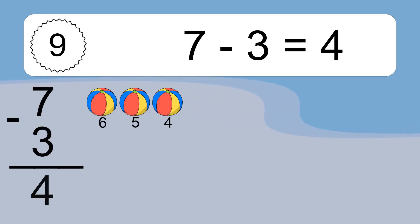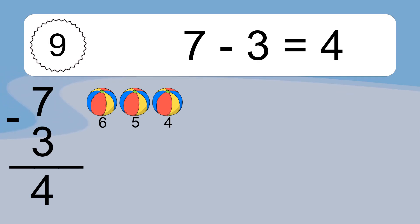7 minus 3 equals 4. Let's count it: 6, 5, 4.